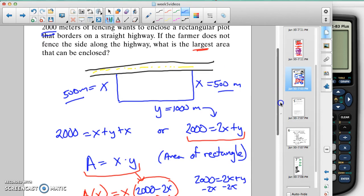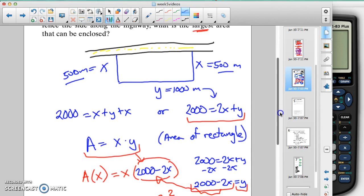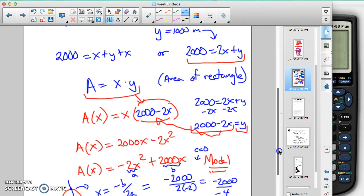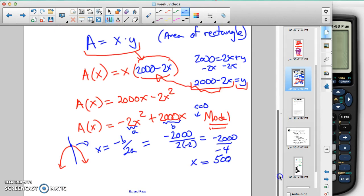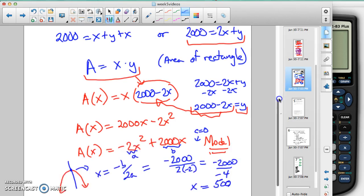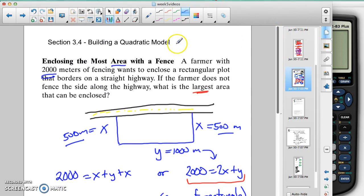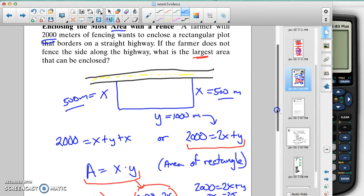All right. So that means our, the largest area is going to be when x is 500. So our area function here is what we need to use to answer the question. So we go back. We look at the question. It says, what's the largest area that can be enclosed?